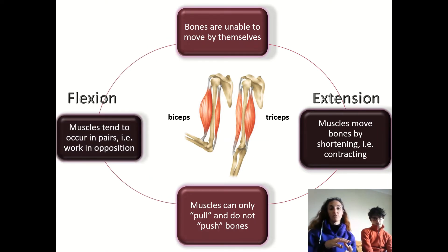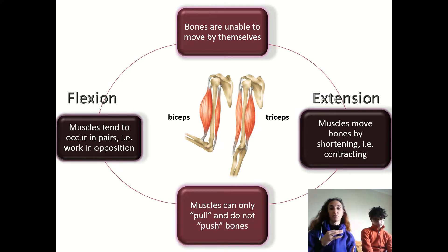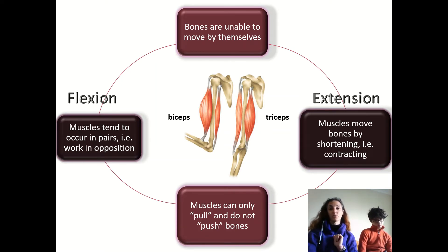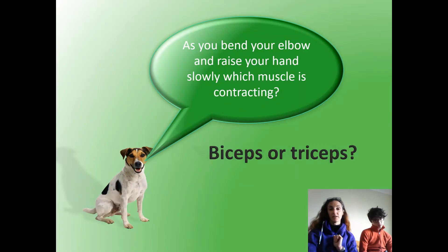So because they can only pull, muscles tend to occur in pairs, and we refer to this as working in opposition. And on our next slide, we're going to test how some of our muscles work in opposition.